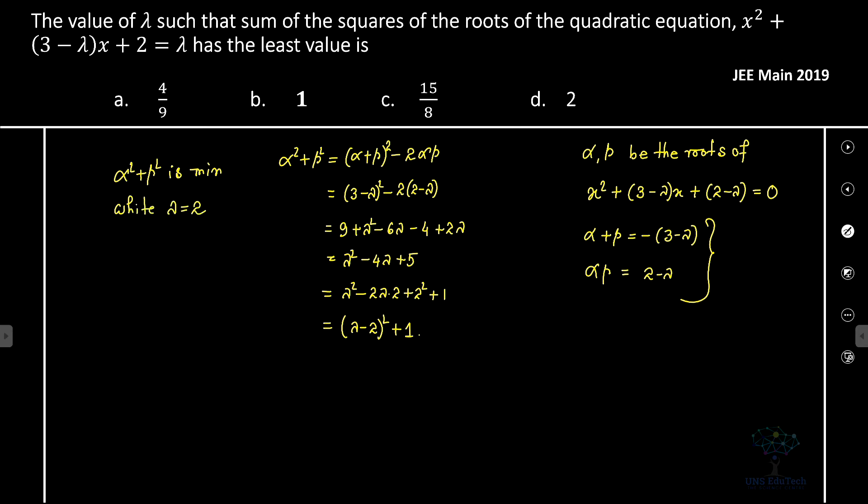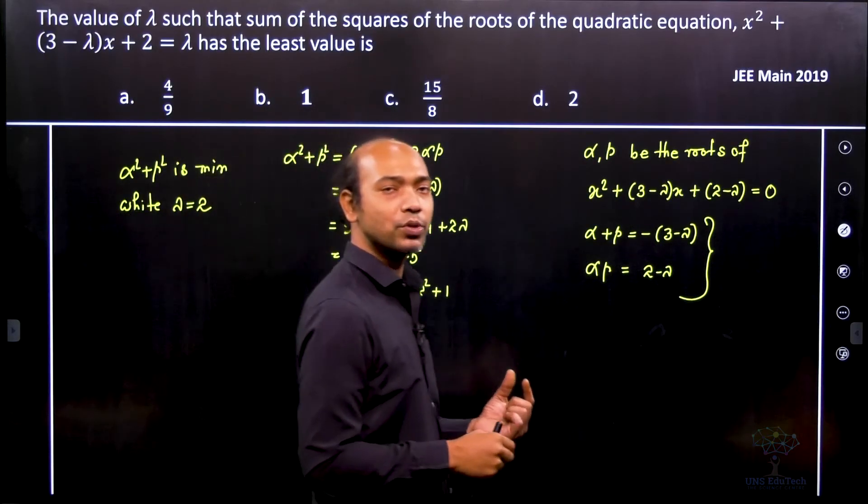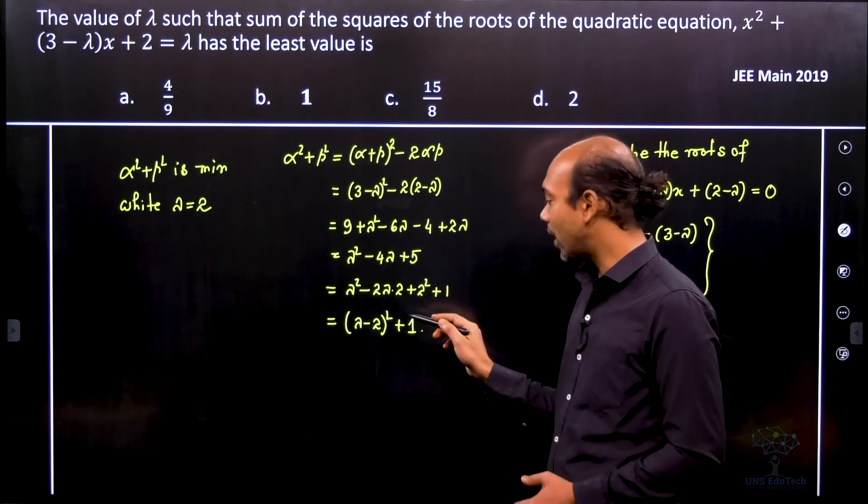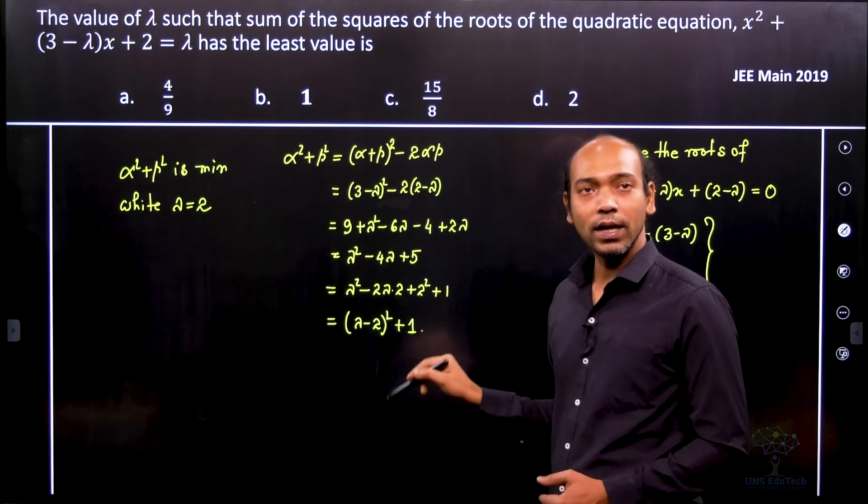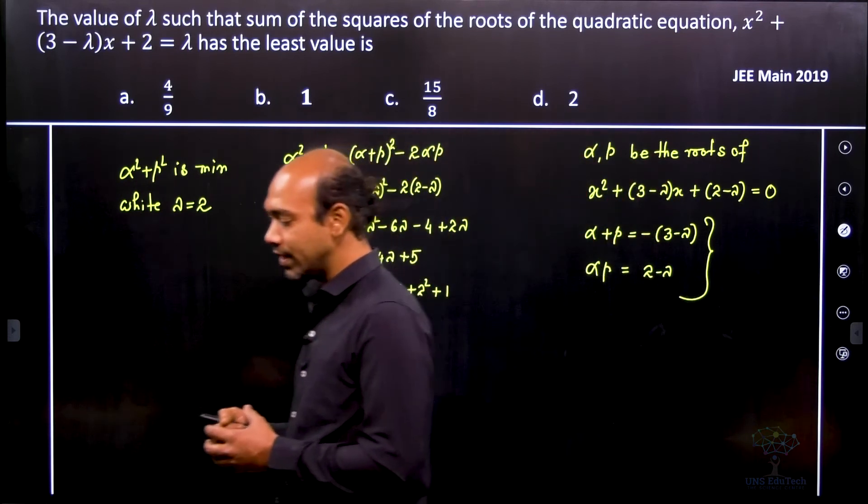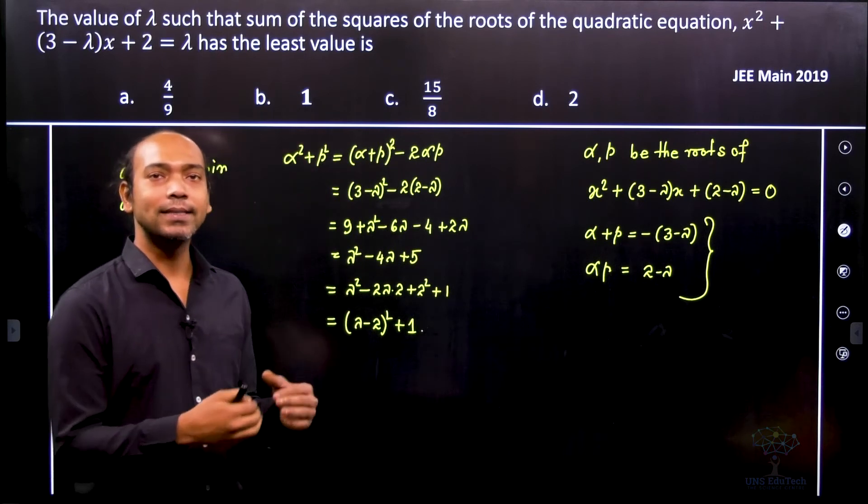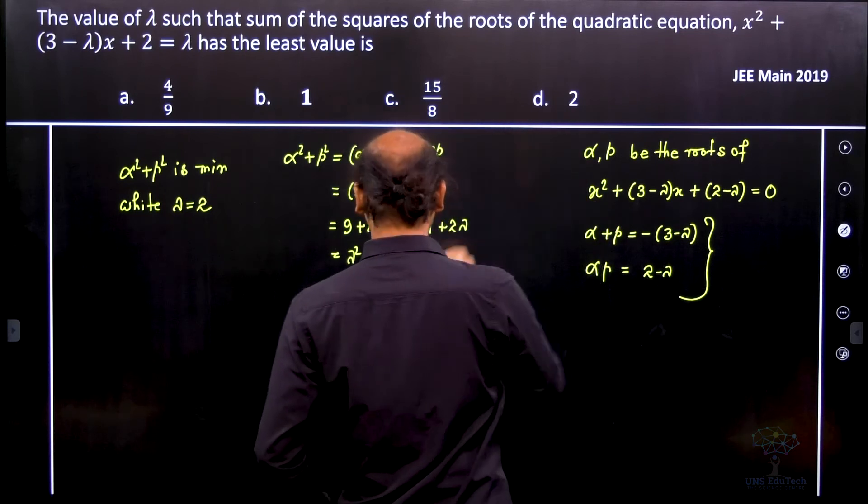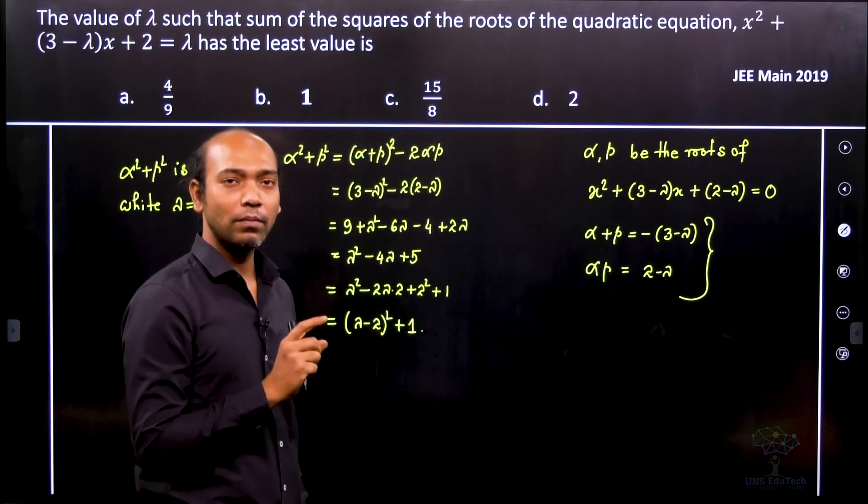Because if lambda equals 2, then this value is 0 - lambda minus 2 whole square, this particular value will be removed and then we'll find the solution is 1. So here for this problem obviously lambda is equal to 2. So therefore when lambda equals 2 you will find that the value is minimum.